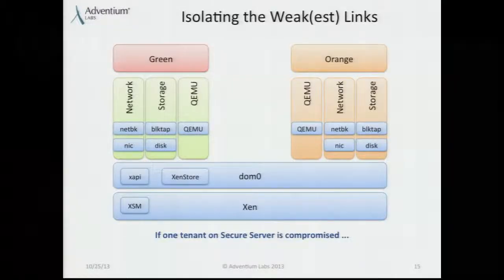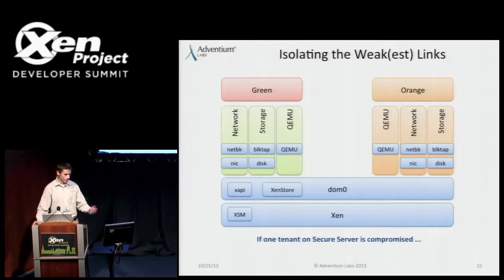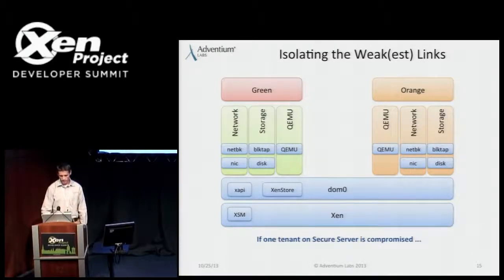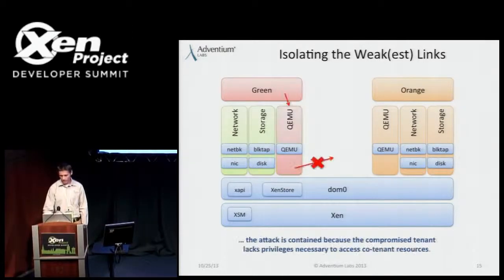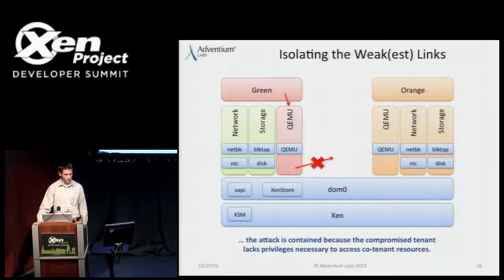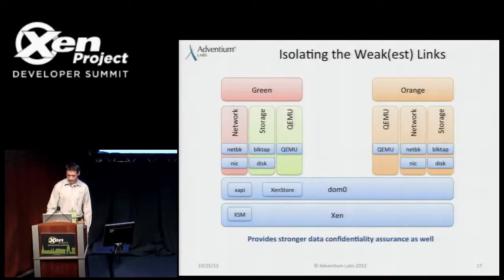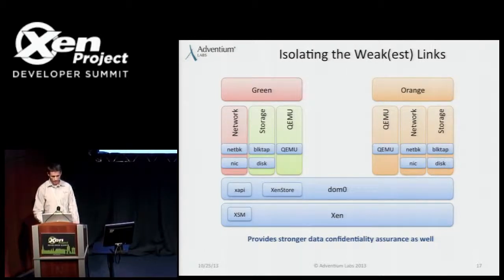Now I'll talk about how disaggregation addresses this problem. We've isolated these components in different domains and use mandatory access controls to restrict the privileges assigned to various components. If an attacker compromises the green domain and uses it as a springboard to compromise the QEMU emulator, the only memory they're able to map in is the memory assigned to that green VM — there's been no compromise of the other tenant sharing the system. You can make similar claims about providing stronger data confidentiality by isolating the storage stacks.